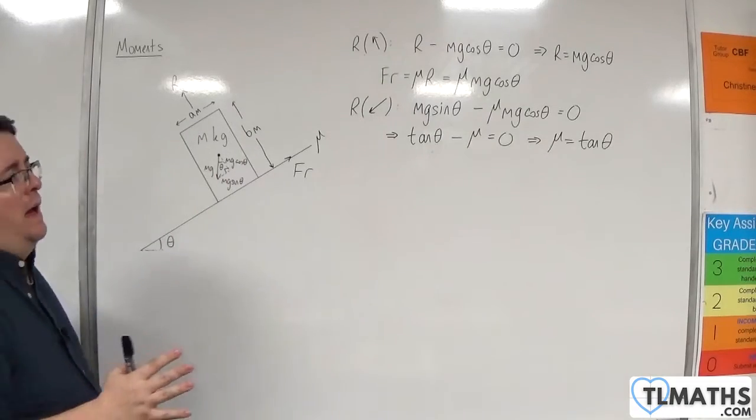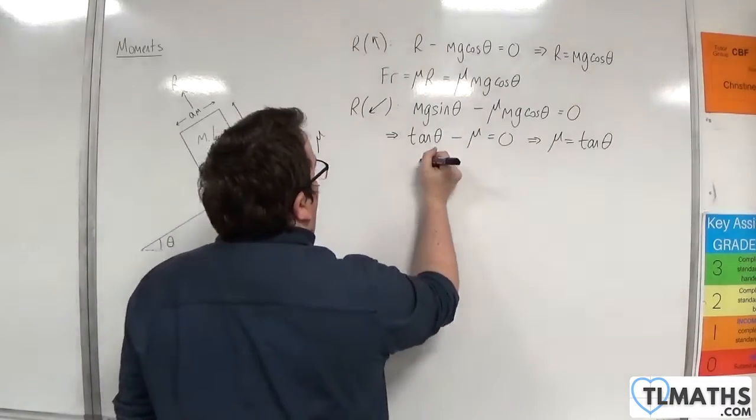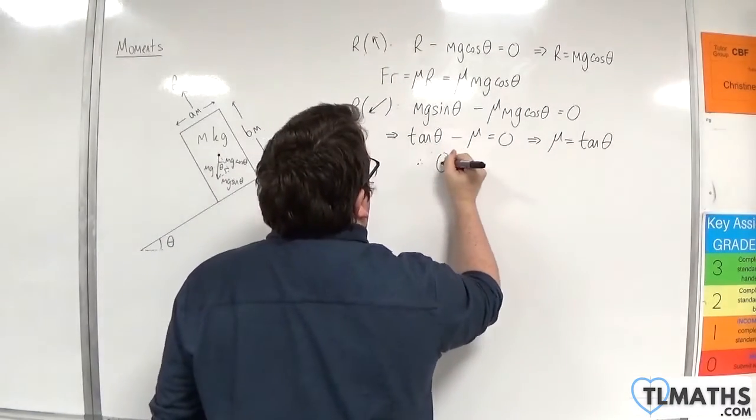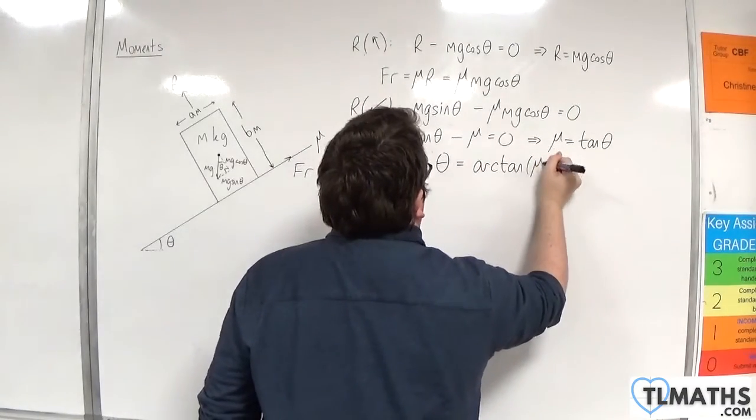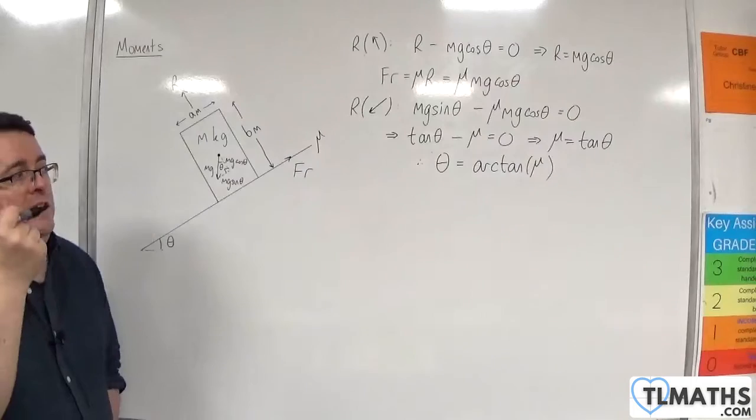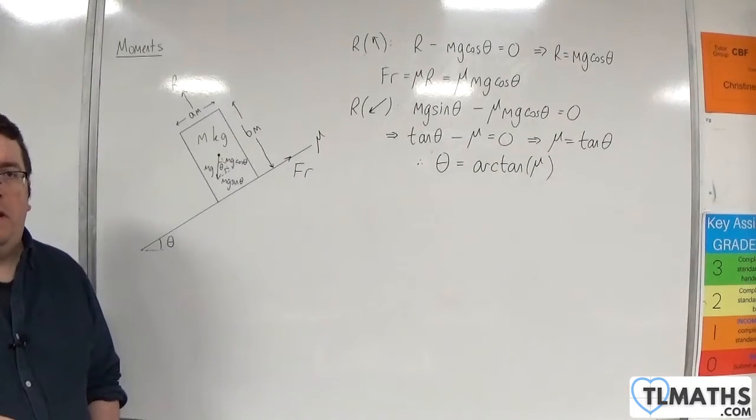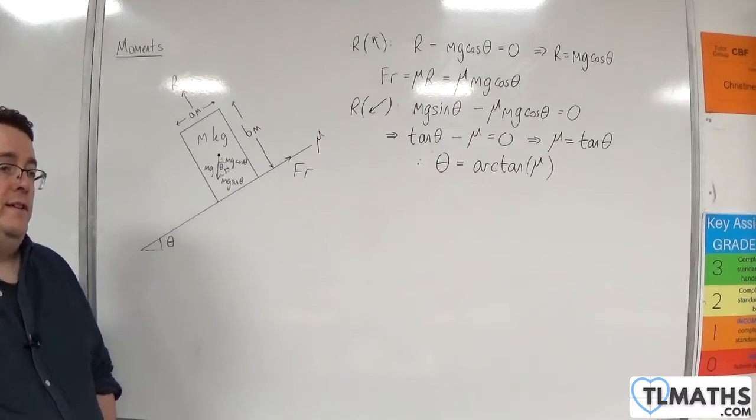So if we inverse tan both sides, then theta would be arctan of mu. And if theta is greater than arctan of mu, then the block will slide down the slope.